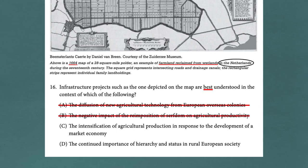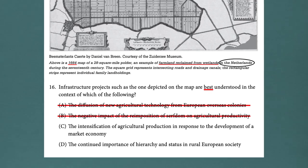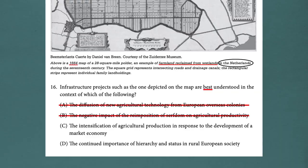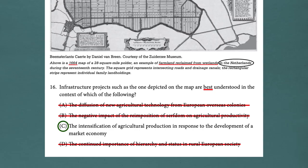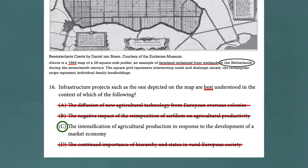D: The continued importance of hierarchy and status in rural European society — yes, that's true during this time, but don't get confused. All this map is showing is how wetlands were reclaimed for agricultural productivity. There is precisely no indication of hierarchy and status from this map. So the answer is C: the intensification of agricultural production in response to the development of a market economy. That's why 1664 and the attribution are important — that's around the time the Netherlands was transitioning to a market economy.